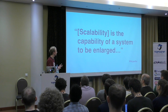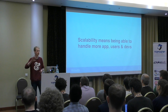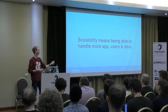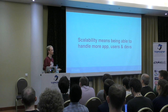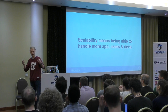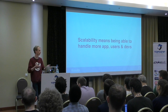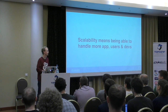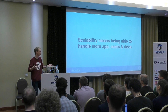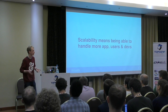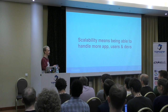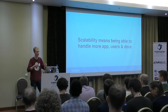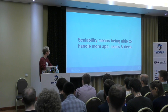Scalability basically means being able to handle more app parts, more users, or more developers. You want to be able to handle more application parts — a big application shouldn't be unmanageable. The code base should stay clean and you should remain productive. You should handle more users without everything crashing. And no matter the team size — one developer or thousands — all of them should be able to work independently, not blocked by the architecture.